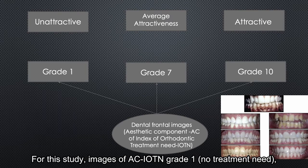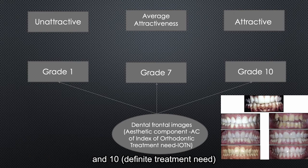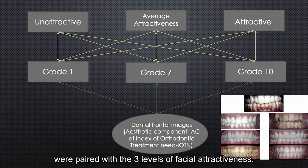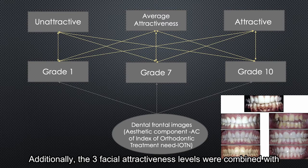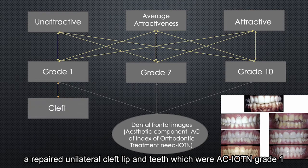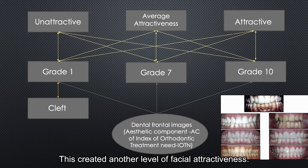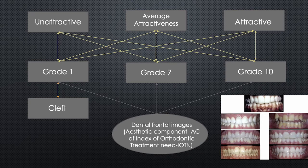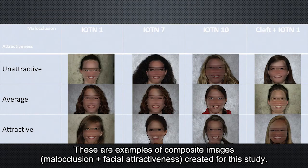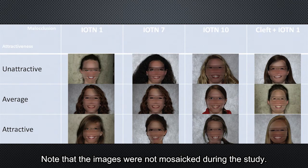For this study, images of IOTN grade 1 (no treatment need), grade 7 (slight treatment need), and grade 10 (definite treatment need) were paired with the three levels of facial attractiveness. Additionally, the three facial attractiveness levels were compiled with a repaired unilateral cleft lip, which was IOTN grade 1, to eliminate the variable of dental attractiveness and create another level of facial attractiveness. These are examples of composite images, malocclusions, and facial attractiveness created for this study. Note that the images were not mosaiced during the study.